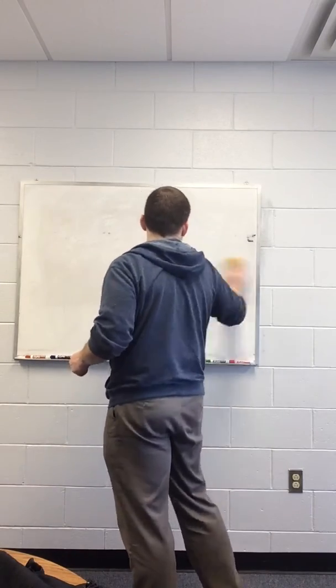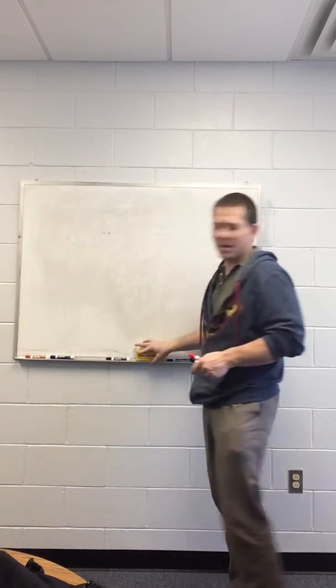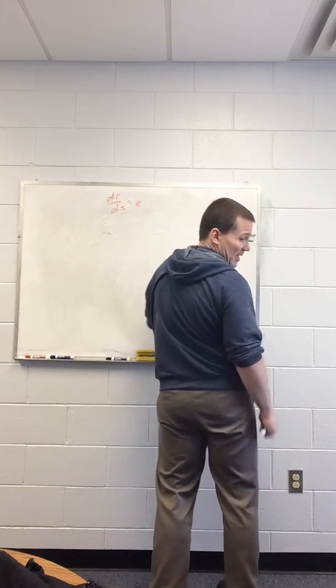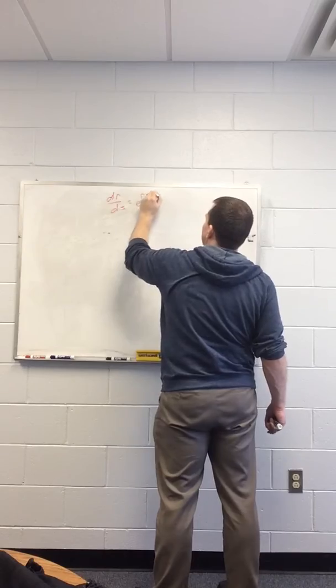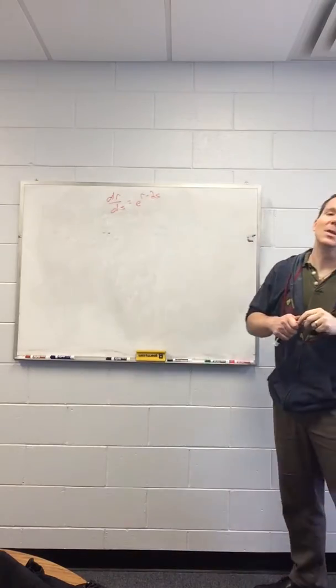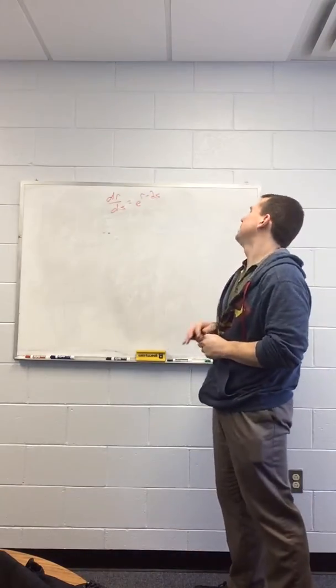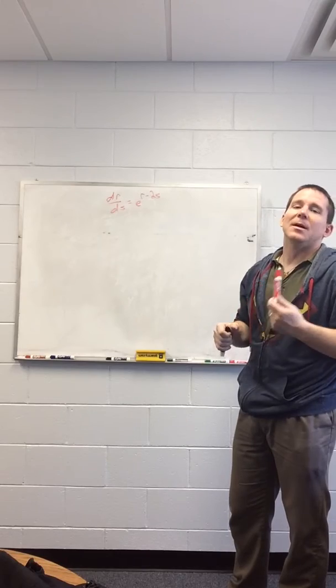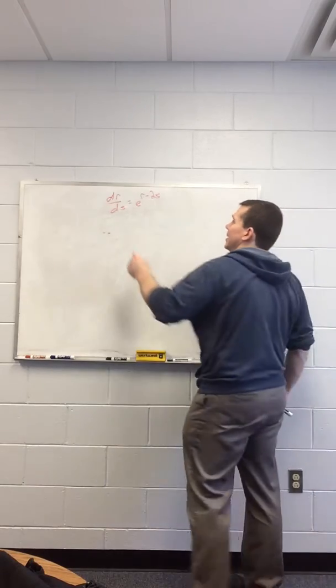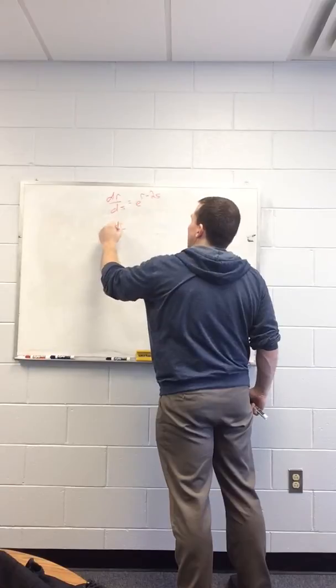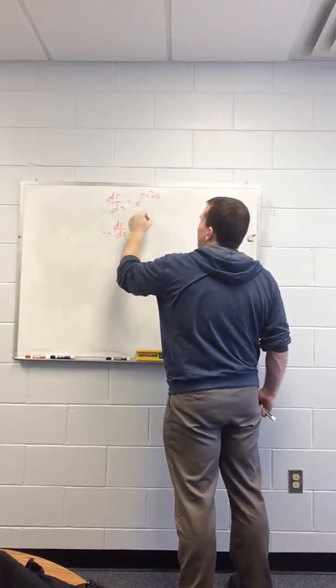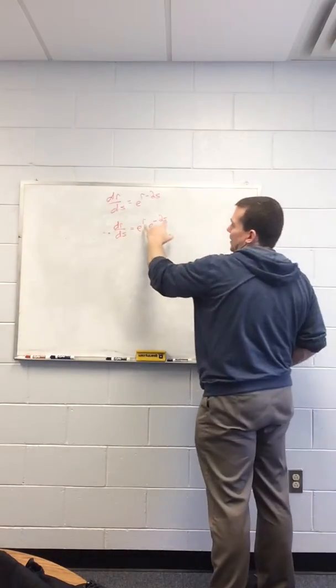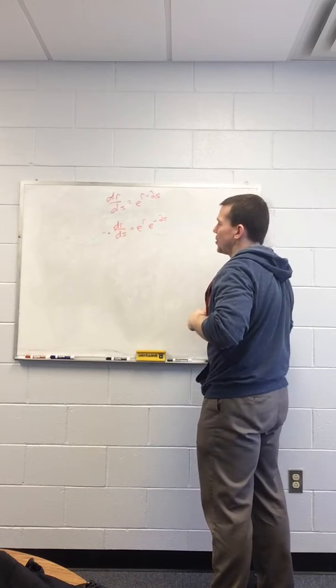Now, we'll do another separation of variables. Suppose we have dr/ds = e^(r - 2s). We want to separate the variables, but in this case, that's an exponential with both r and s in the power. So, what do we do? Assuming we remember our rules for exponents, we know we can rewrite this as dr/ds = e^r * e^(-2s). Now, the exponentials and the variables are separated. So, now, just do my algebra.